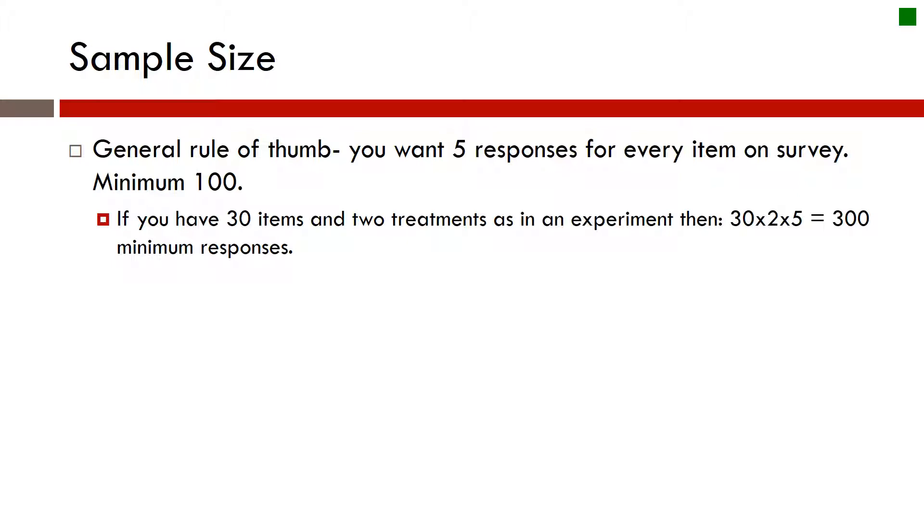This method does not really take into account anything about the sample or your test parameters, but it's just a general rule for sample size. Five respondents for every item, minimum of 100. So if you only have five items, still collect at least 100 responses.